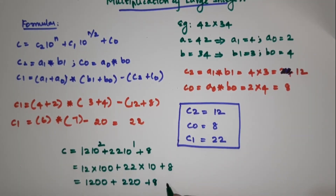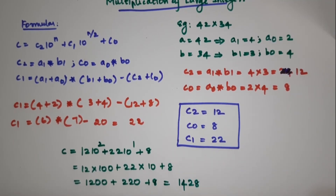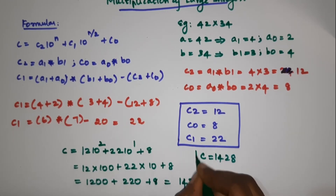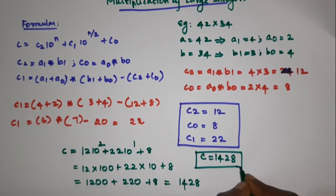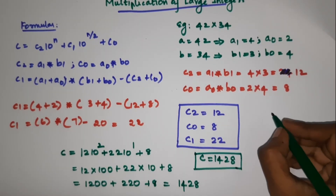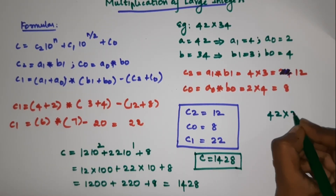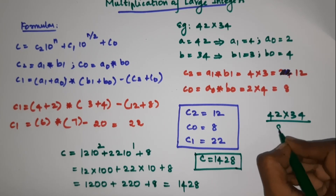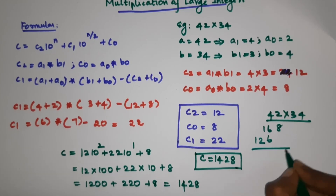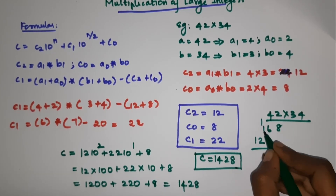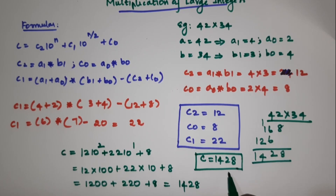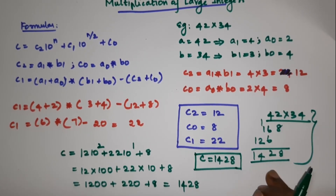So the result is 1428. C's value is 1428 based on multiplication of large integers. We can verify: 42 multiplied by 34 directly — 4 twos are 8, 4 fours are 16, 3 twos are 6, 3 fours are 12 — gives 1428. The multiplication value is confirmed as 1428.